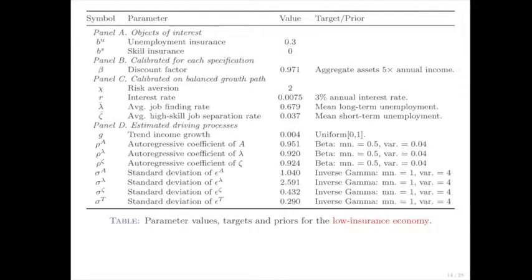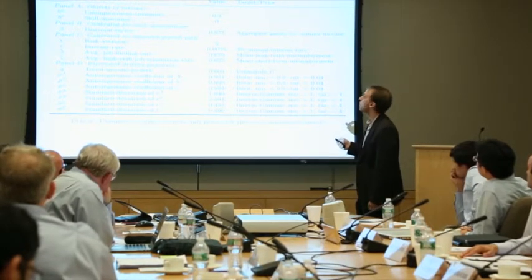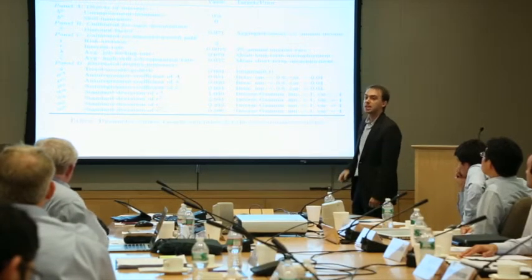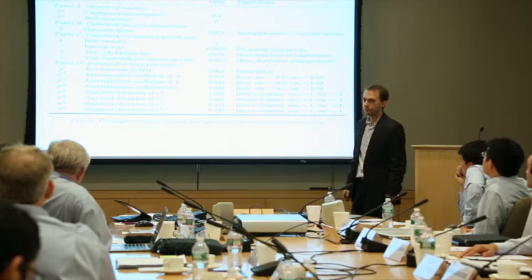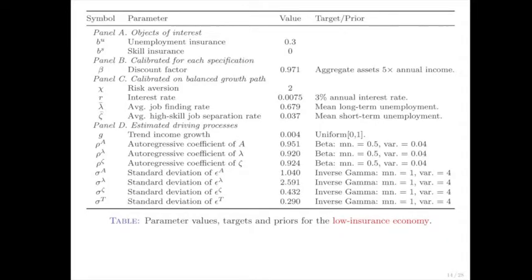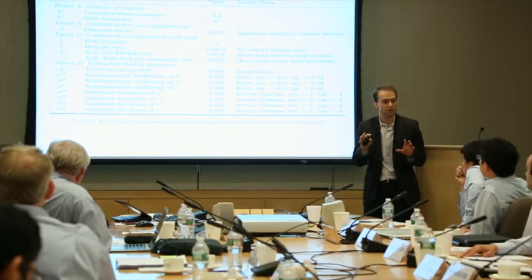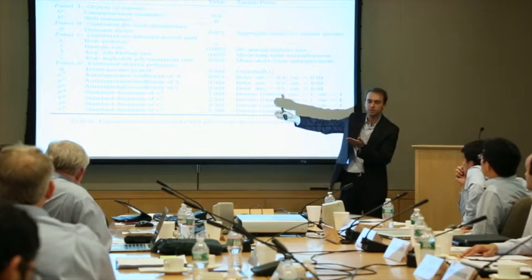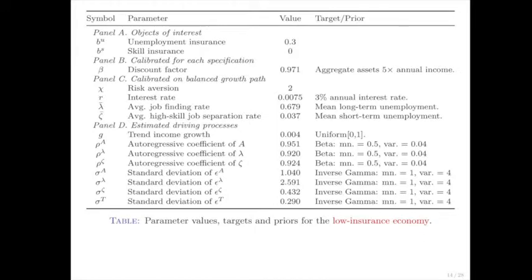Let me show a little about the parametrization. What I'll call the low-insurance economy has a low level of insurance against unemployment risk and no insurance against skill risk. I take the equations of the model relating to the income process — setting aside the consumption side — and estimate by maximum likelihood the parameters of those processes. That's where the driving processes come from.